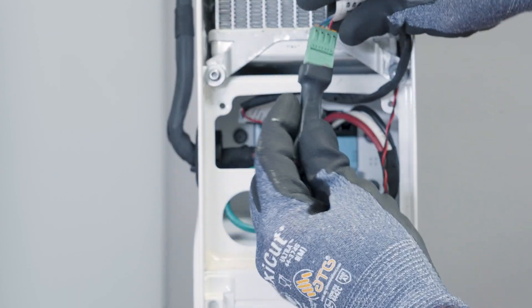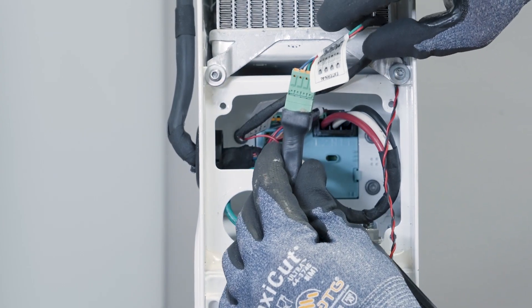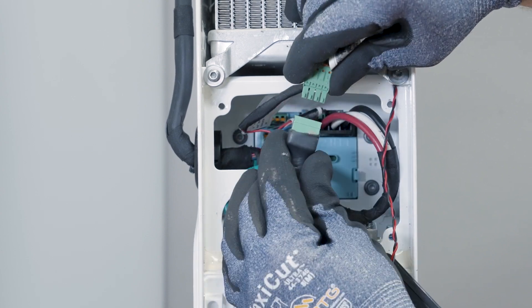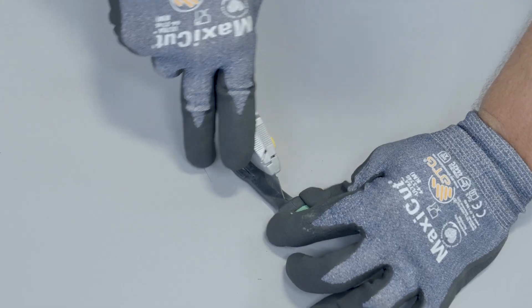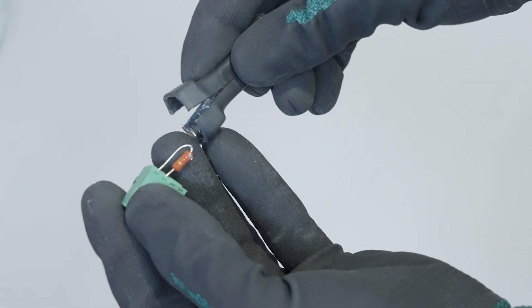Locate the harness with the black shrink-wrapped connector in each Powerwall Plus. Detach the connectors and remove the shrink wrap and resistors.